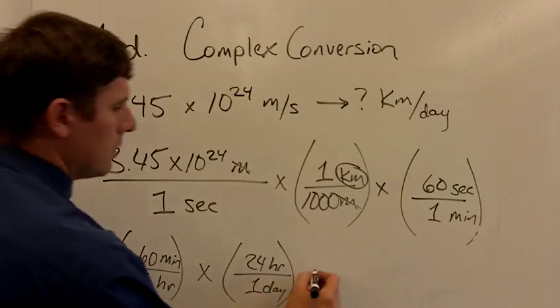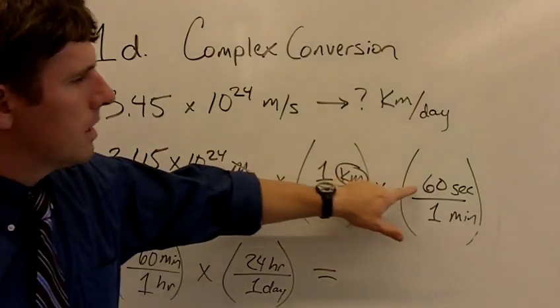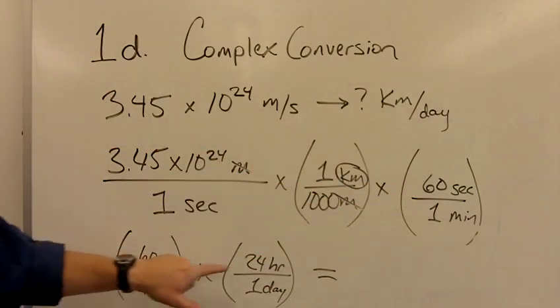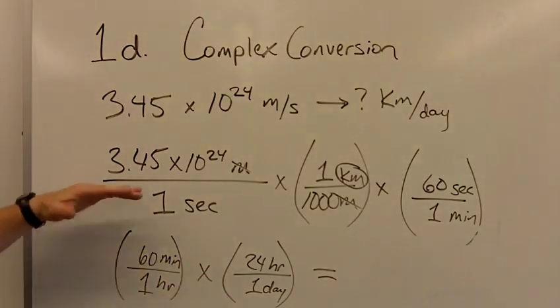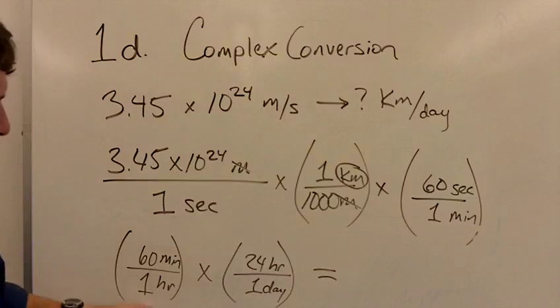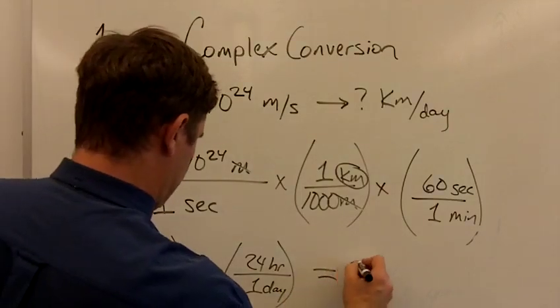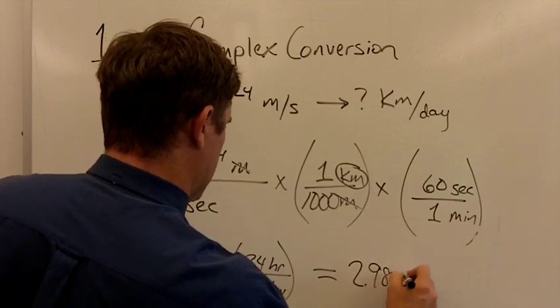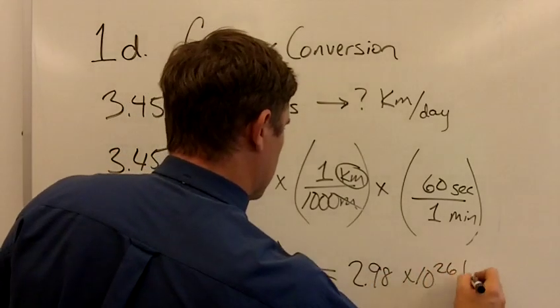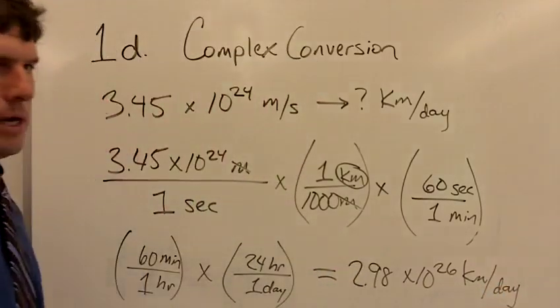So now we just multiply everything straight across. 3.45 times 10 to the 24th, times 1, times 60, times 60, times 24, all of that divided by 1 times 1,000 times 1, times 1, times 1, which should come out to 2.98 times 10 to the 26th kilometers per day. And there's the answer.